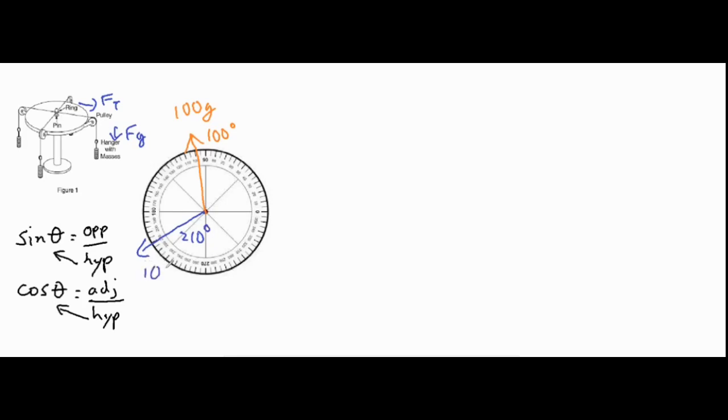Our goal is to figure out where to place a certain mass to even out both of these masses here. Basically what we want to do is use these vectors and break them up into their x and y components.